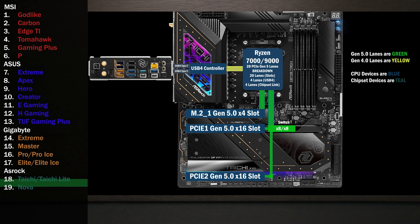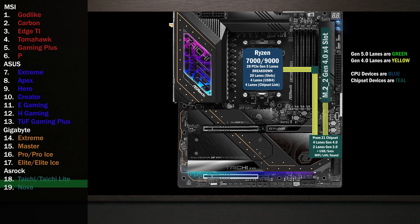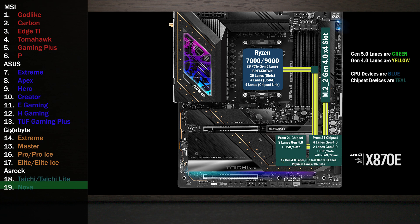Moving on to the chipset. The first chip is connected by the Gen 4 CPU uplink. This chip connects four lanes at Gen 4 to another M.2 slot. The second chip is connected to the first with a four-lane link and connects an additional eight lanes at Gen 4. Together they form the X870E chipset. Depending on the board, it can support 12 Gen 4 lanes and up to eight Gen 3 lanes. The second chip connects to the third and fourth M.2 slots, both with four lanes at Gen 4.